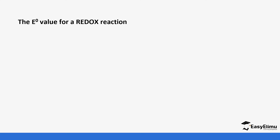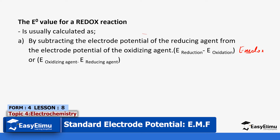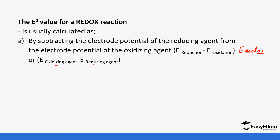The E cell value of a redox reaction is calculated by subtracting the electrode potential of the reducing agent from the electrode potential of the oxidizing agent. Basically it is E reduction minus E oxidation — I like putting it as E redox. So reduction minus oxidation, or E oxidizing agent minus E reducing agent. This is by use of formula.